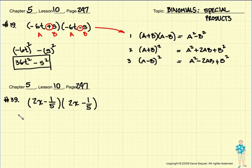Let's try number 39. Number 39, again, we have this is the A, here's the A again, here's the B, which is 1 fifth, here's the B. And this time we have two minus signs.